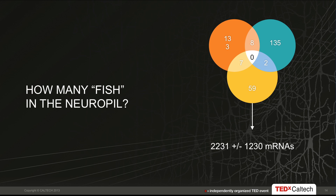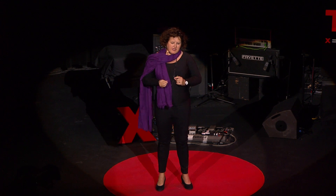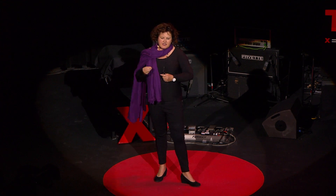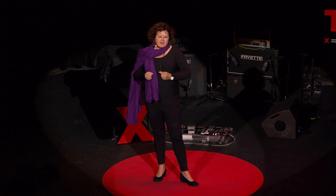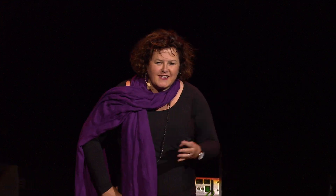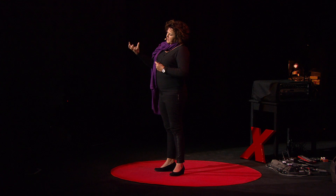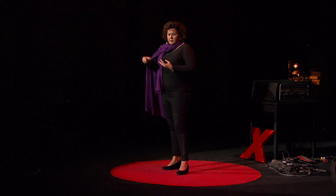To discover those mRNAs, we used a technique called deep sequencing. Unlike other techniques, this is one where you don't have to know what you're looking for. You isolate mRNA from the dendrites and axons and directly sequence — read out the nucleotide sequence — to discover what those mRNAs are coding for. We were really pleased: we got a number very close to the estimate. We discovered there were 2,500 mRNAs out in the processes — almost a complete toolkit for building a synapse, right there near the synapse.